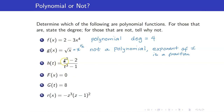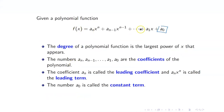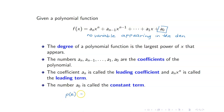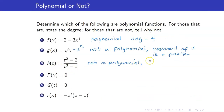For the next one, h of t equals t² minus 2 over t³ minus 1. This is not a polynomial because you have a variable in the denominator. If we go back to the definition, there is no variable appearing in the denominator. However, you can have a denominator as long as it's not a variable. For example, p of x equals (1/3)x³ plus x² minus 4/5 is still a polynomial, because the denominators are just constants. So h of t is not a polynomial because of the variable in the denominator.